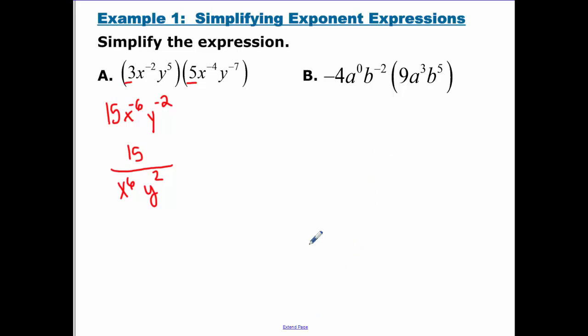For B, B is very similar. You can take and multiply the negative 4 and the 9, and that becomes a negative 36. Anything to the 0 power is 1. So I have an A to the 3rd left over. For B to the negative 2 plus 5, that leaves B as B to the 3rd.